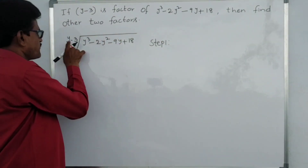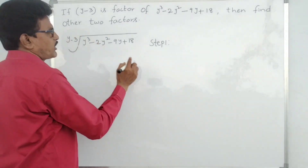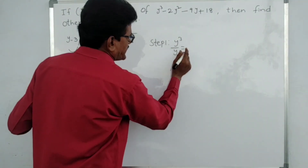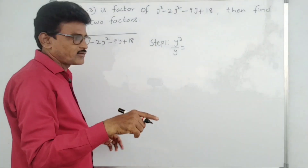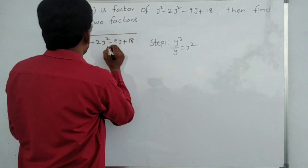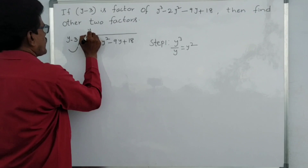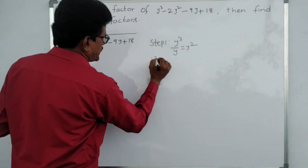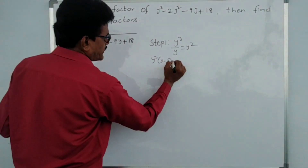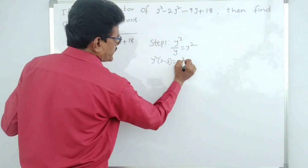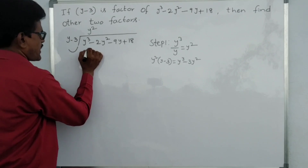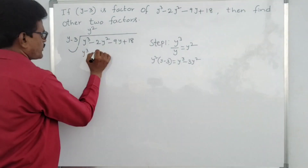Step one: first term by first term. y³ divided by y — y into y into y, divided by y, one y cancels, so we get y². Write y² here. Now y² into (y minus 3): y² into y gives y³, minus 3 into y² gives 3y². Write y³ minus 3y² here.